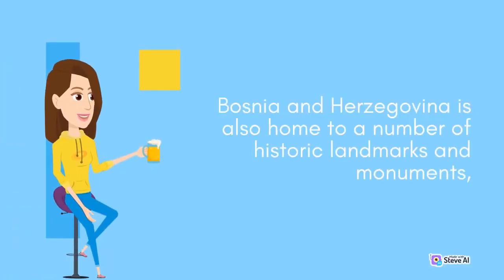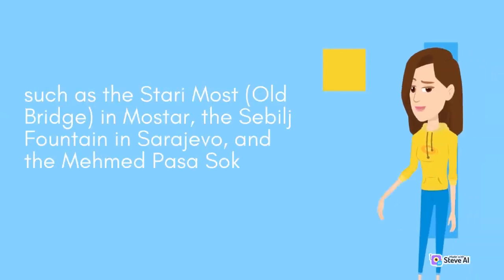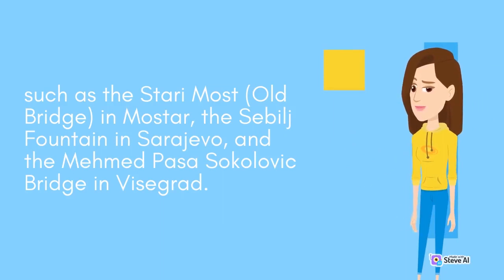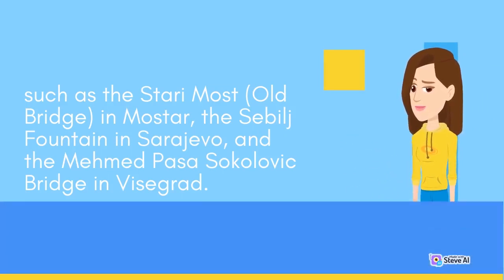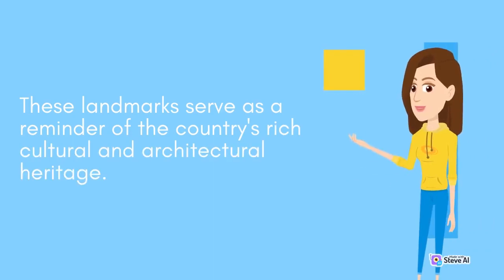Bosnia and Herzegovina is also home to a number of historic landmarks and monuments, such as the Stari Most (Old Bridge) in Mostar, the Sebilj Fountain in Sarajevo, and the Mehmed-Paša-Sokolović Bridge in Višegrad. These landmarks serve as a reminder of the country's rich cultural and architectural heritage.